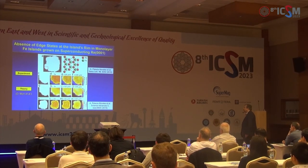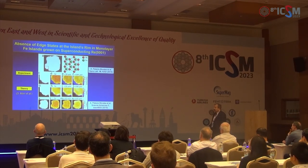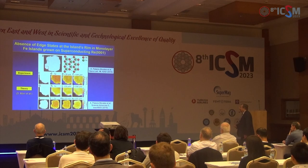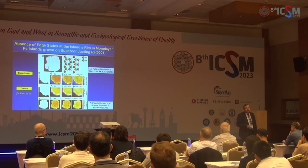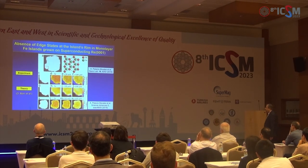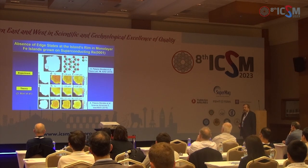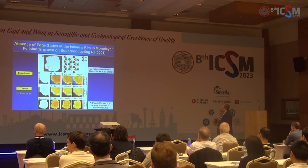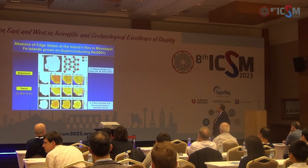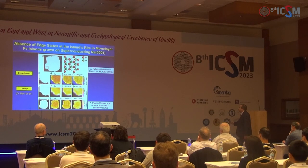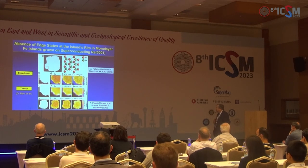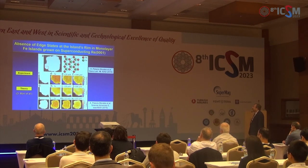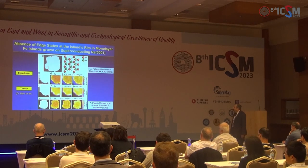You see immediately that you get enhanced density of states at the edges, but there is also a finite density of states inside the interior of the island. This rules out a topological superconducting phase, because for a topological superconductor the interior of the island should show no density of states. This was of course a puzzle, so we got help from theory—from Jade Moore and colleagues in Chicago.